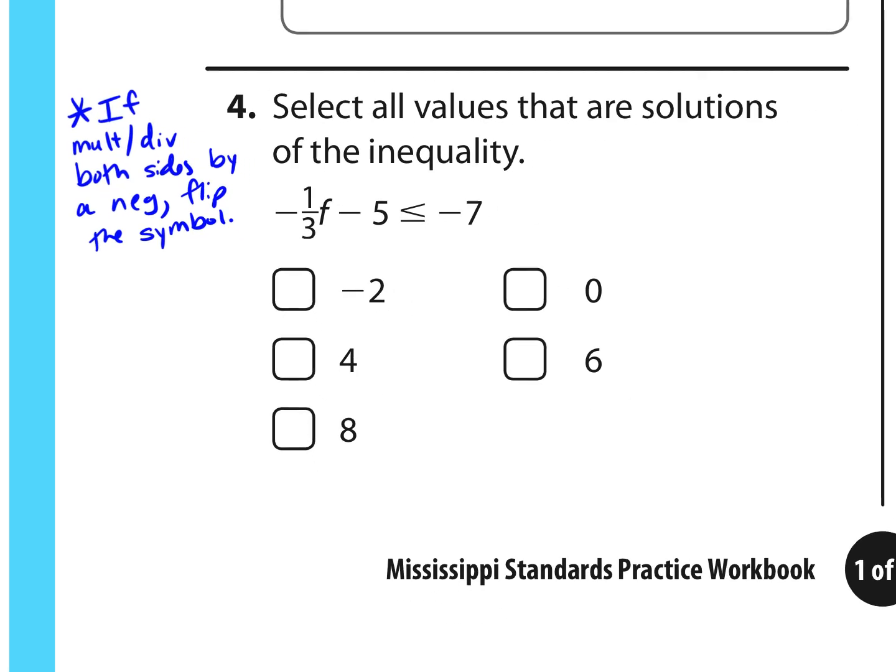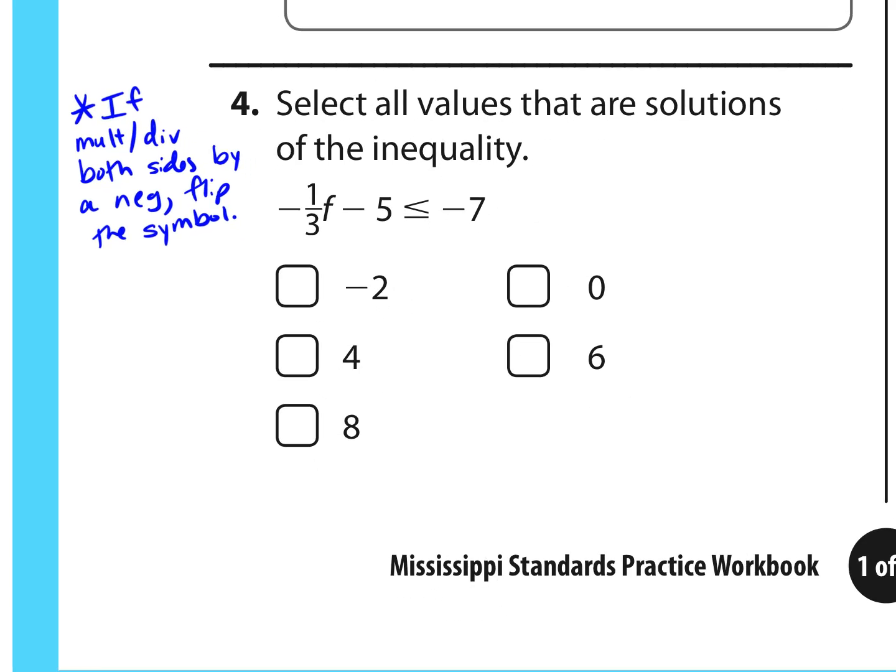Let's look at number four. There's a couple ways to do this. I'm going to actually solve the inequality. You could test each of the numbers to see if they are a part of the solution as well. So I want to get this term negative one-third F by itself, so I'm going to add five to both sides. Once we get negative one-third F is less than or equal to negative two.